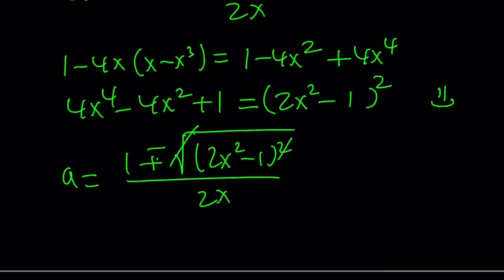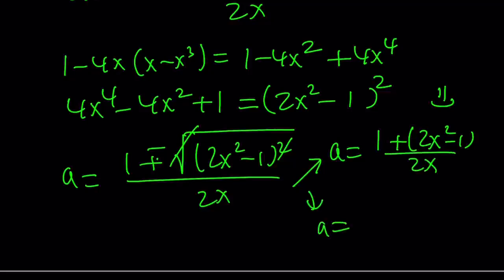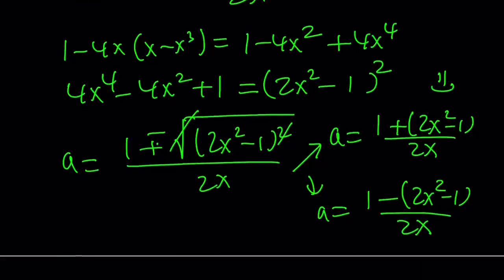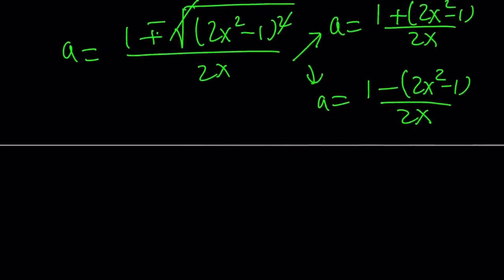Let's plug it in. A can be written as 1 plus minus the square root of 2x squared minus 1 quantity squared divided by 2x. Since we have a perfect square inside the radical, we can square root it. Square root and the square cancels out, but we have to use absolute value, but the plus minus will take care of that.